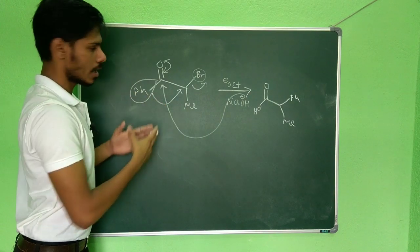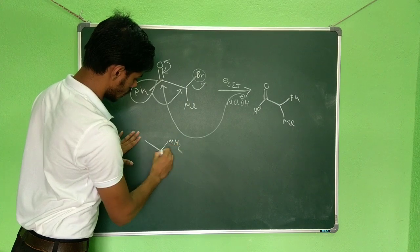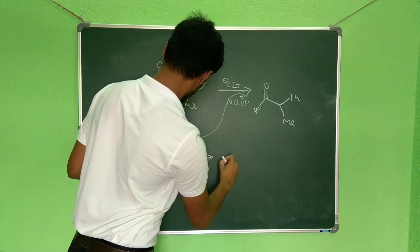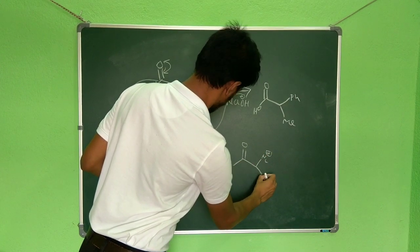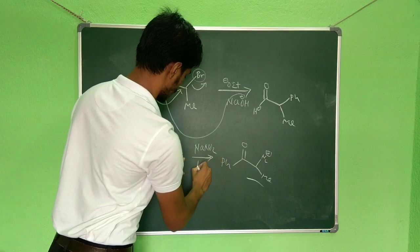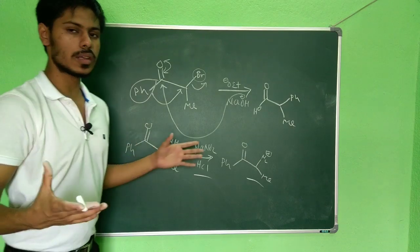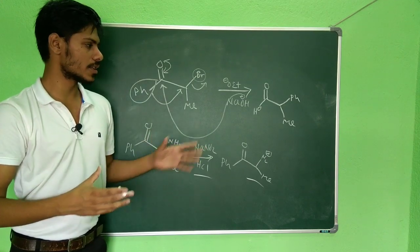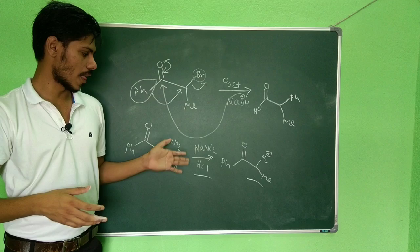The substrate for semi-benzylic rearrangement doesn't have to have benzil-type structure; any other leaving group works. For instance, they may give an NH₂ group which is first converted to a diazonium salt (N₂⁺) using NaNO₂/HCl. This diazonium acts as a leaving group and can also give a rearrangement analogous to Benzyl Benzylic Acid Rearrangement — this is all classified as Semi-Benzylic Acid Rearrangement.